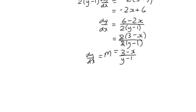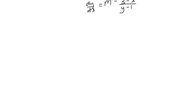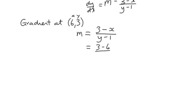So instead of just leaving it there as dy by dx, this time we're going to calculate the gradient. The gradient at the point 6, 3 is equal to 3 minus x over y minus 1. x is 6, y is 3. So 3 minus 6 divided by 3 minus 1, which is negative 3 over 2.